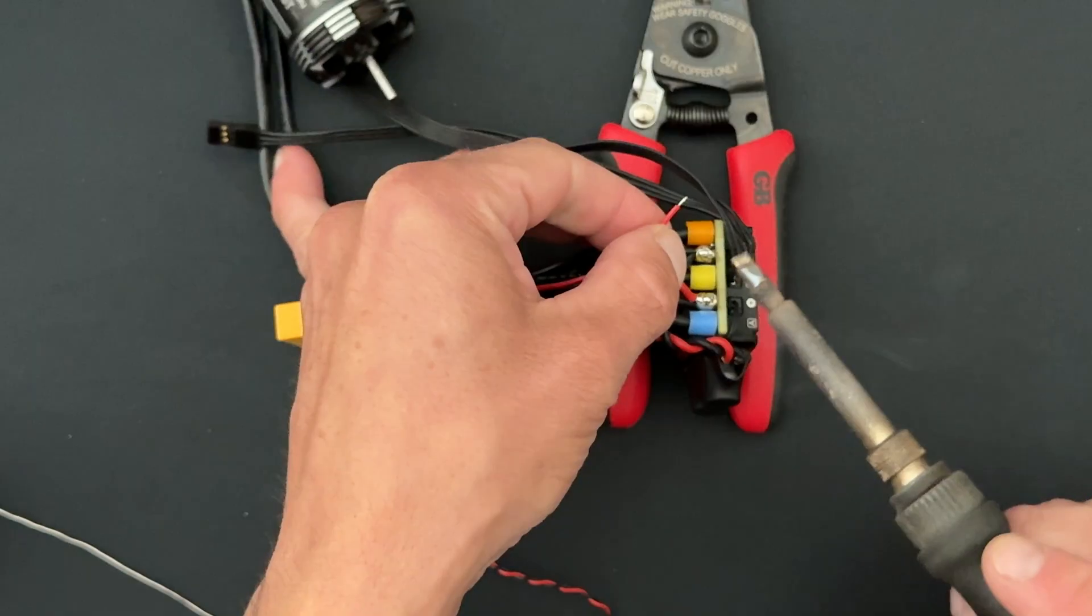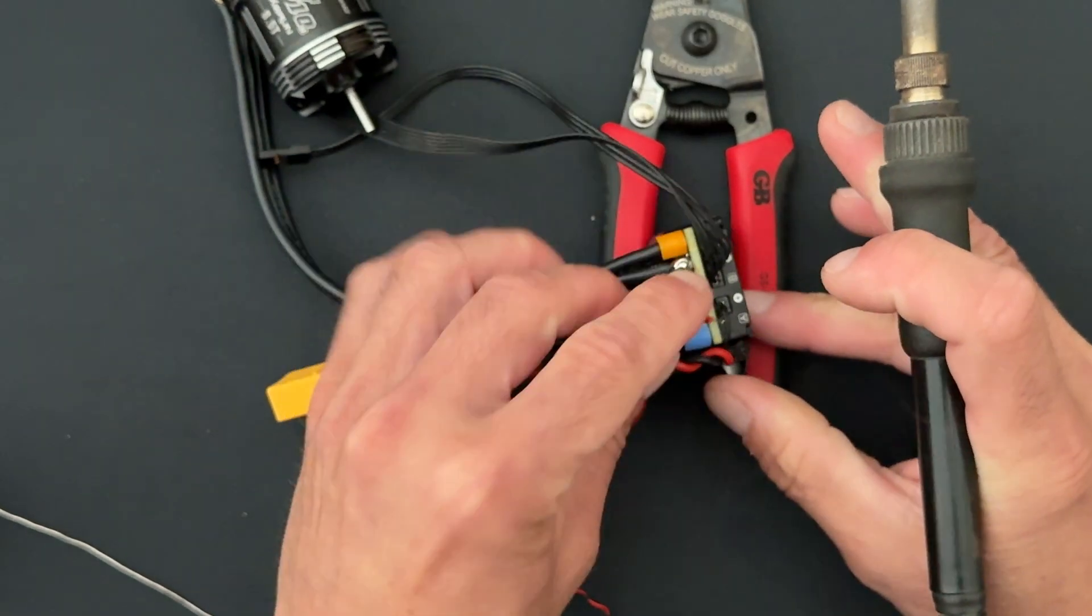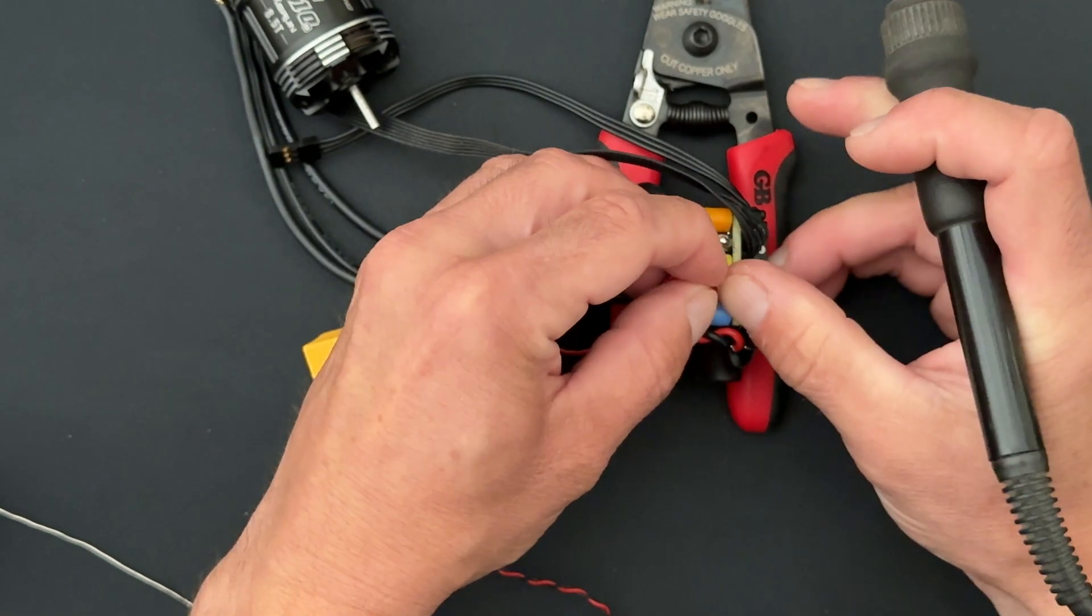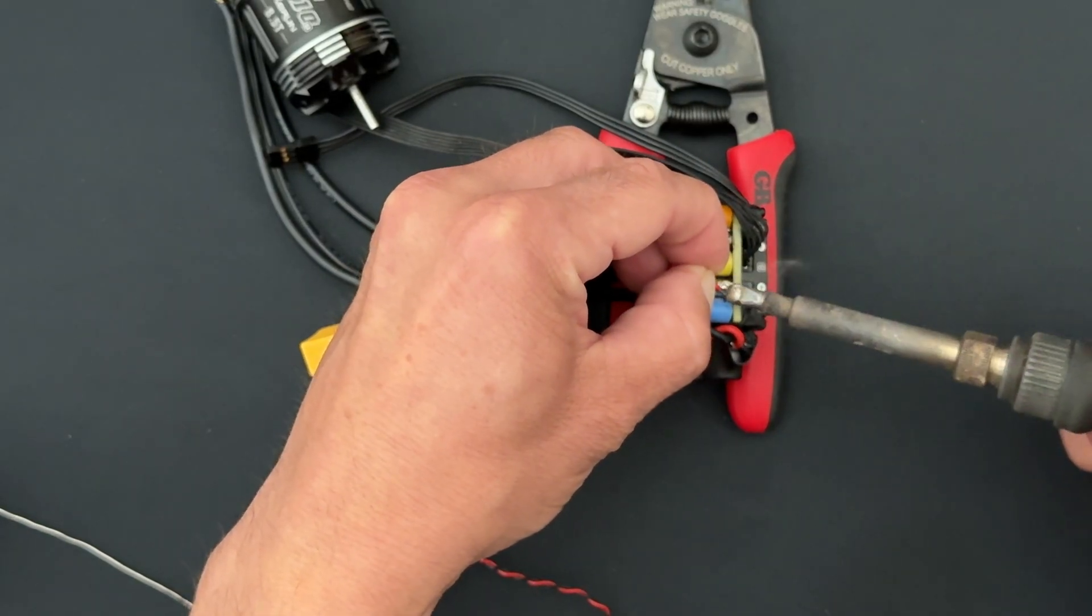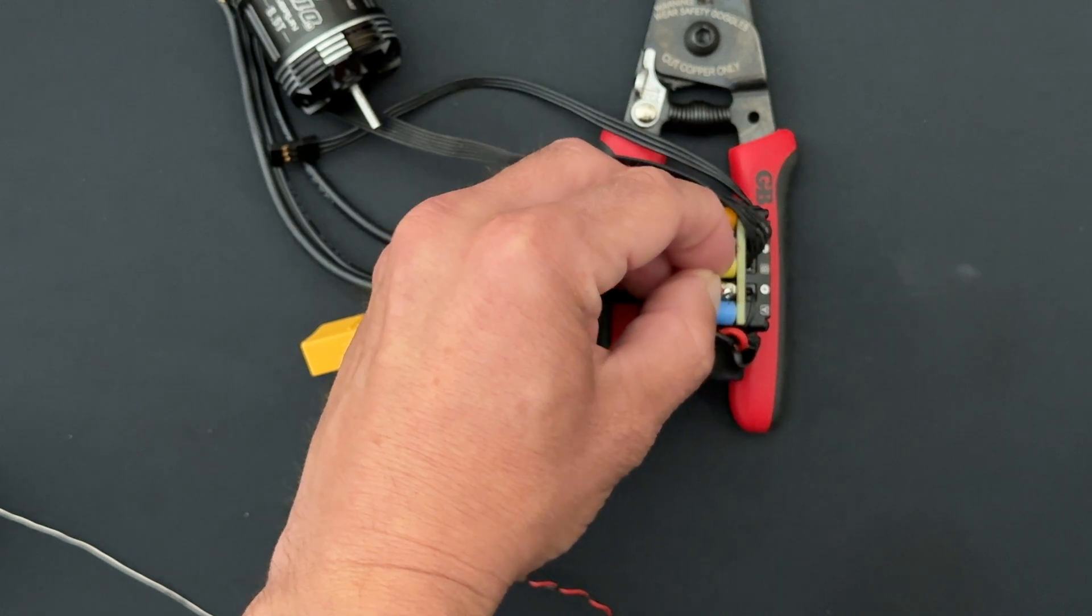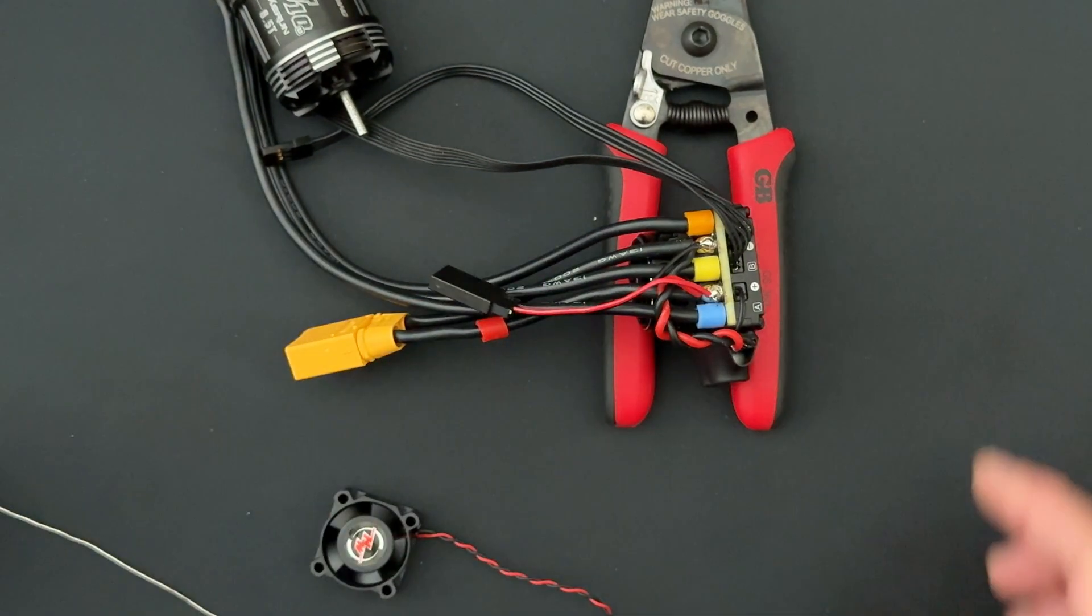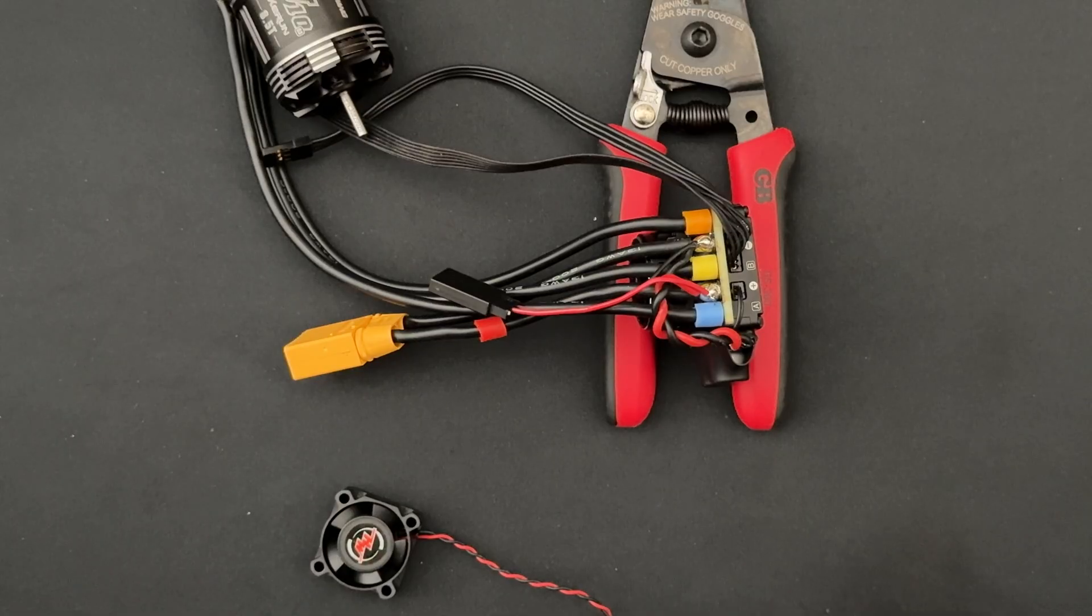So place that guy there, solder that guy on, place that guy there, solder that guy on. And that's pretty much all there is to it. And now I've got this extra little JST plug for power. So let's take a real quick look.